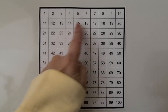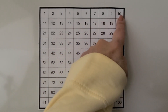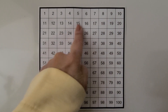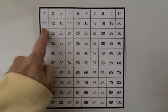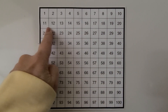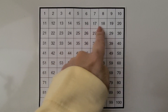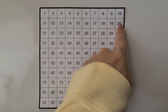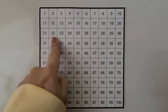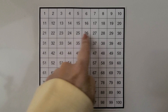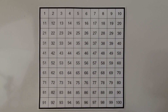Now we can count from 1 all the way up to 100. When we get to the end of a row, we go down to the beginning of the next row and go across. When we get to the end of that row, we go down to the beginning of the next row and continue all the way to 100. You can count with me.